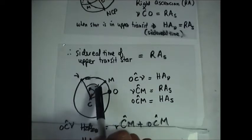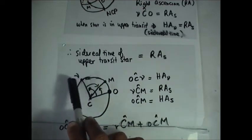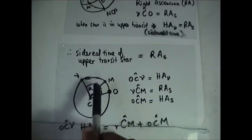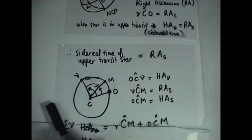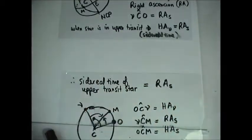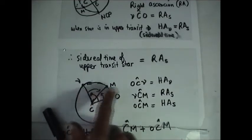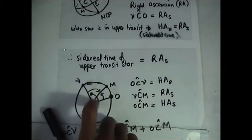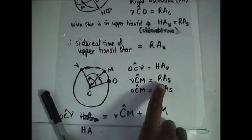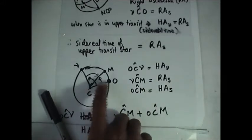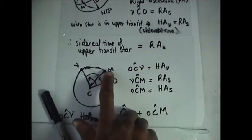We have an angle VCM through east, because this side will be west and this one will be east. We have VCM, but we are measuring from point V to the hour circle, to point M — the point where the hour circle cuts the celestial equator. We are looking at this diagram from above, from the celestial pole. So angle VCM is the right ascension of star S, measured from the origin V. We also have angle OCM, which is the hour angle of star S, because we are measuring it to point M.